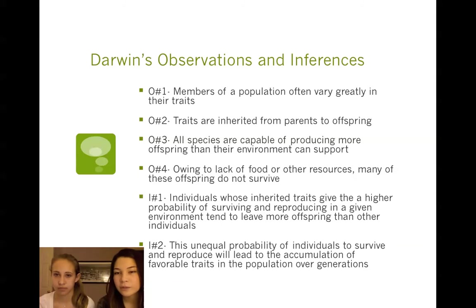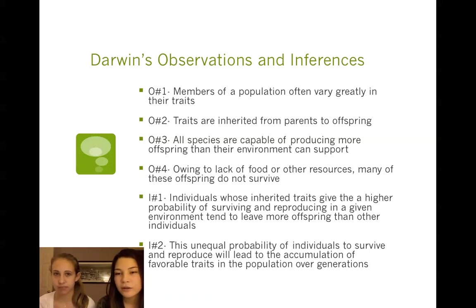His first inference was that individuals who inherited traits giving a higher probability of surviving and reproducing in a given environment tend to leave more offspring than other individuals. His second inference was that this unequal probability of individuals to survive and reproduce will lead to the accumulation of beneficial traits in the population over generations.